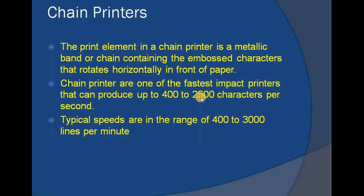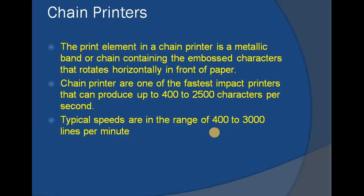Compared to daisy wheel or dot matrix printers, chain printers were more widely used in earlier days. Their speed was 400 to 2500 characters per second, and in terms of lines they can range from 400 to 3000 lines per minute. These are the important impact printers covered in this session. You need to remember the types of impact printers, one or two characteristics each, their speed, and how many characters or lines they can print per second or minute. A more detailed discussion will follow in the third unit. Thank you all.